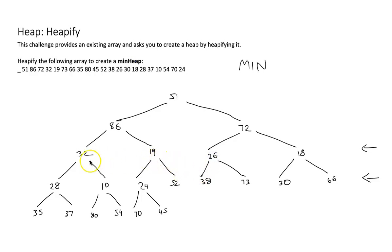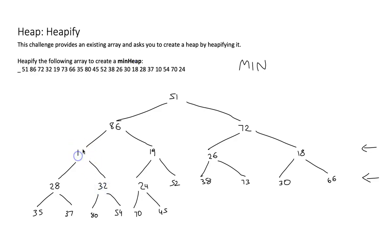Pause the video and try the next two elements in this level. Now catching up: 19 — is 19 less or equal than both children? Yes, that is the case, so no work to do here. But 32 is not less or equal than both children. The smallest child is 10, so 32 sinks and 10 comes up. Then I check: is 32 less or equal than its children now? Yes — so we're done. We finished this level.